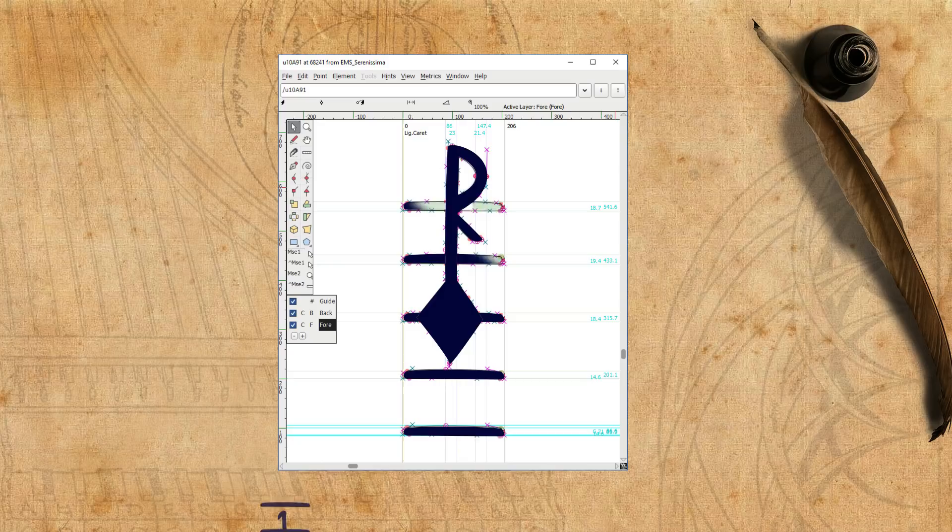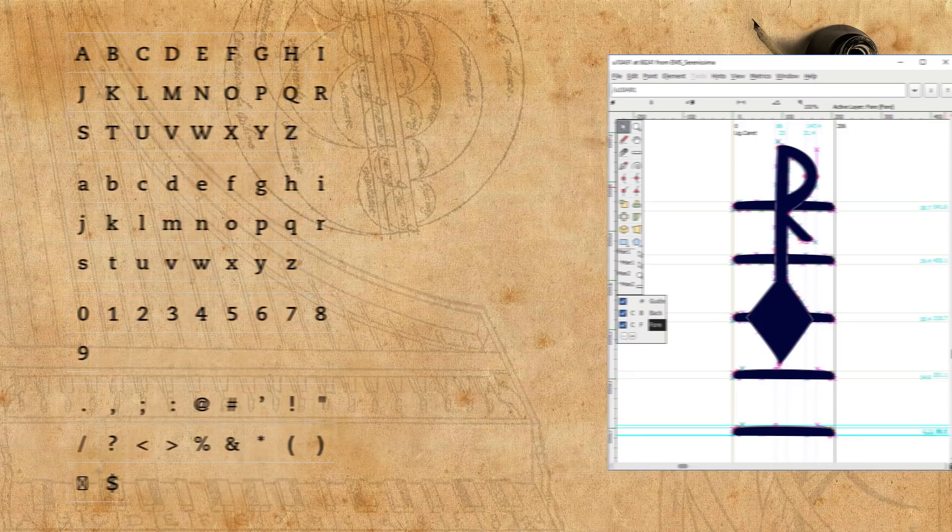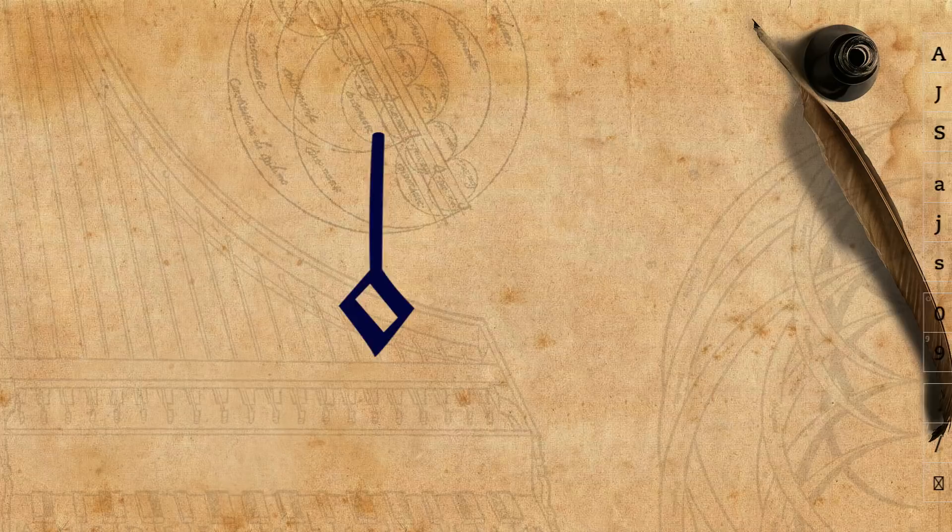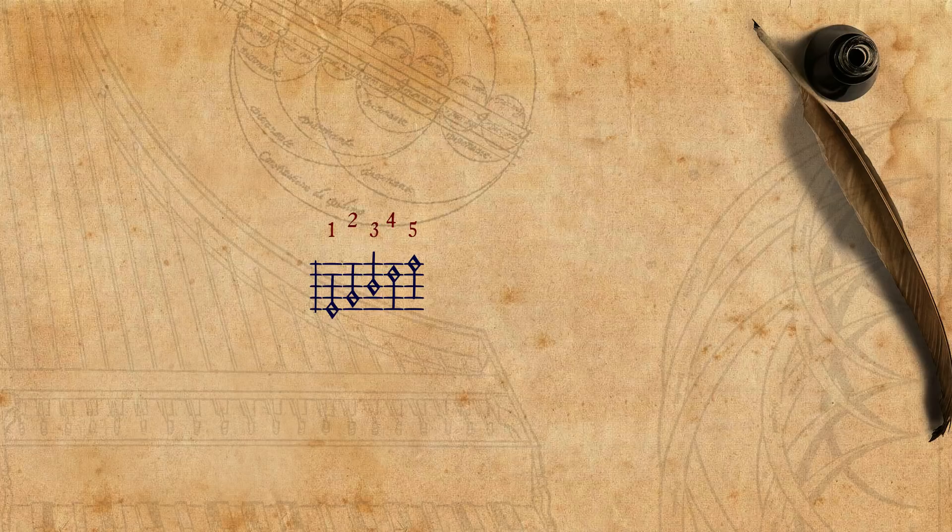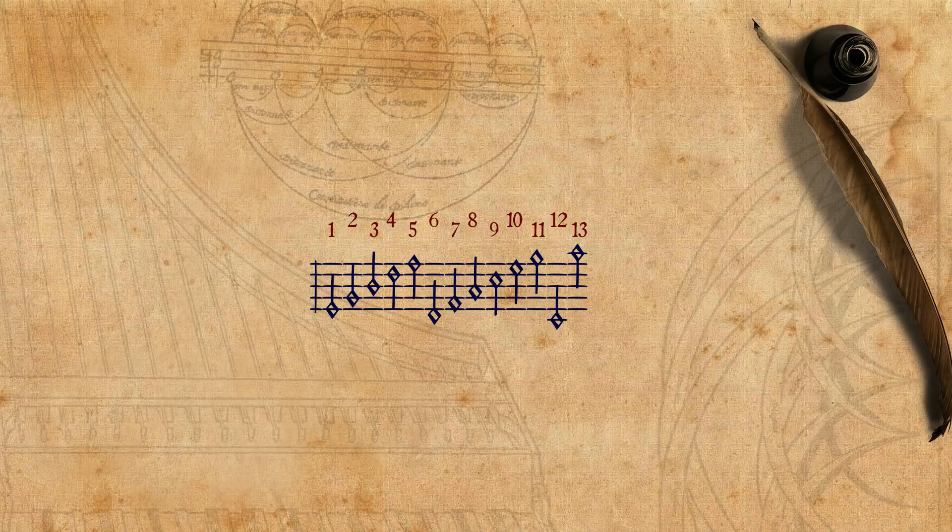As opposed to text printing, where there are only so many letters and other signs, here each type, be it a note or other signs, require no less than fifteen variations, on the lines of the staff, in between the lines of the staff, on the two ledger lines, and beyond the two ledger lines.